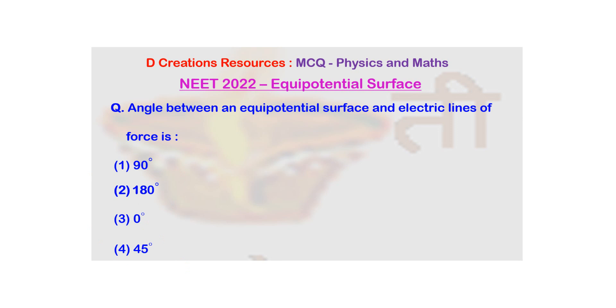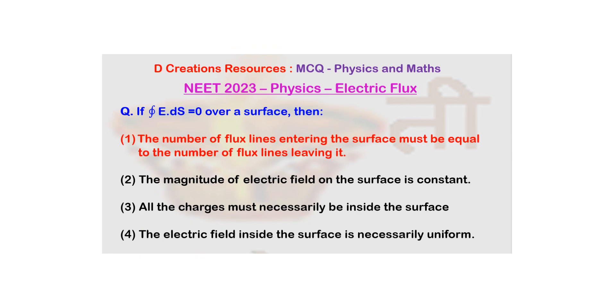If you are able to recollect, we have already spoken in detail about electric lines of force. In fact, we were solving one of the MCQs. The question was if integral E dot ds is equal to 0 over a surface then, and of course, the correct option was the number of flux lines entering the surface must be equal to the number of flux lines leaving it.